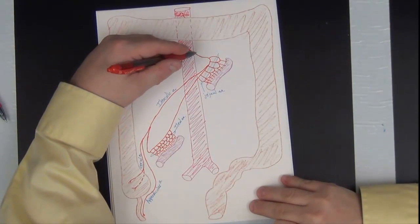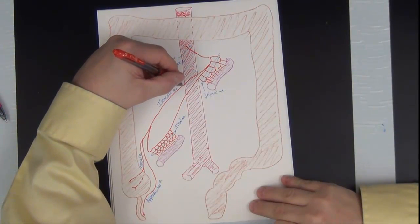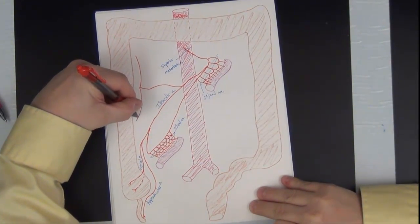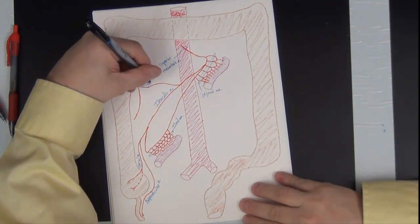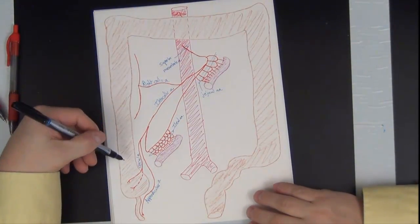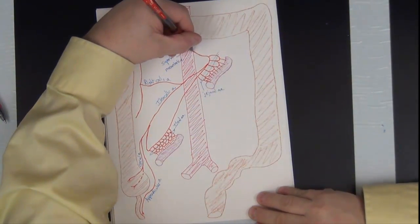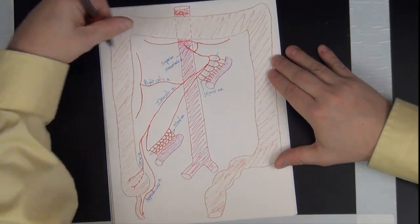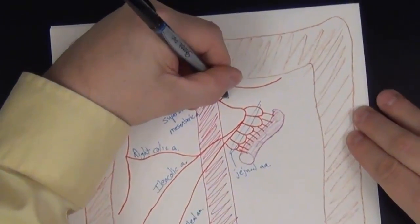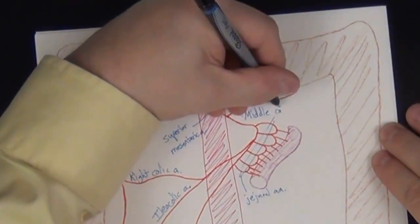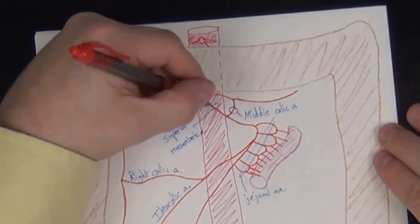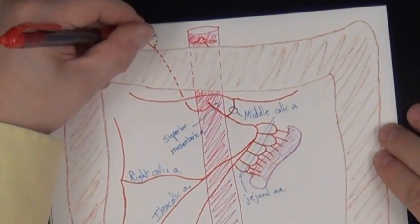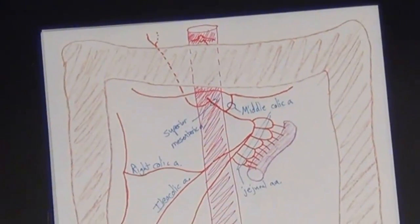Another branch — coming off either the superior mesenteric separately or the ileocolic — goes to the ascending colon: the right colic artery. And the branch going up to the transverse colon is the middle colic artery. For completeness, we also draw in the inferior pancreaticoduodenal artery heading up toward the duodenum and pancreas.